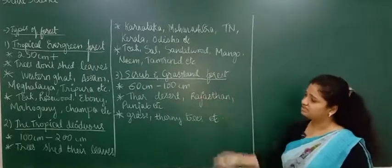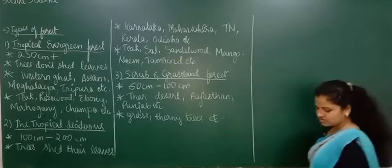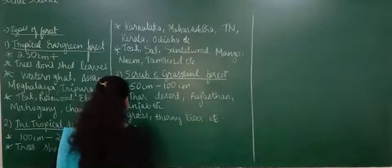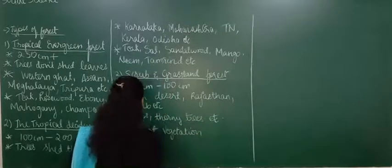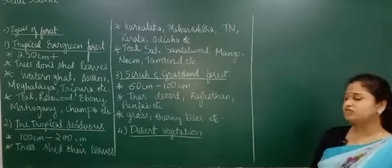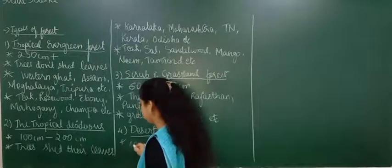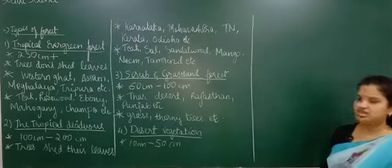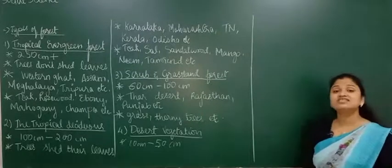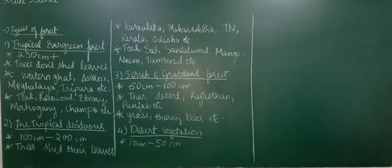The first two types — tropical evergreen and deciduous — are the most important. The others cover only a small part of India. The fourth type is desert vegetation, found in areas with minimum rainfall of 10 to 50 centimetres. Wherever you see 10 to 50 centimetres of rainfall, you will find desert vegetation.